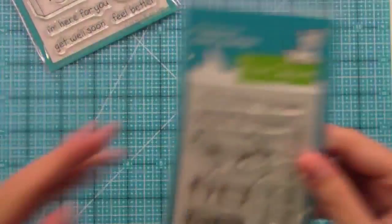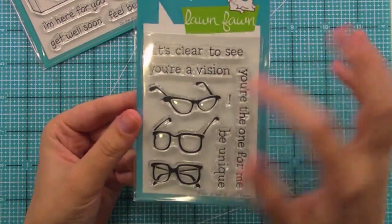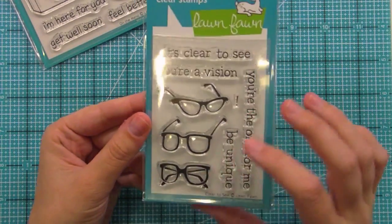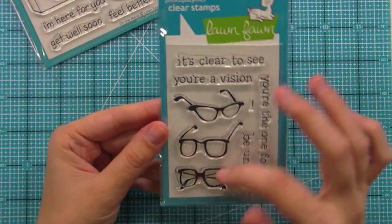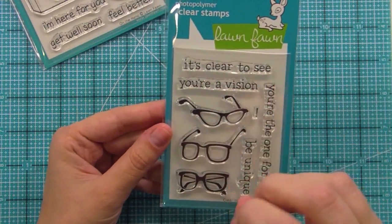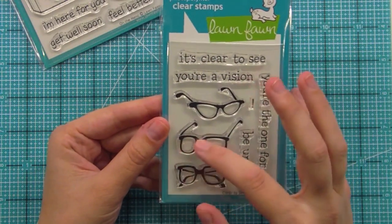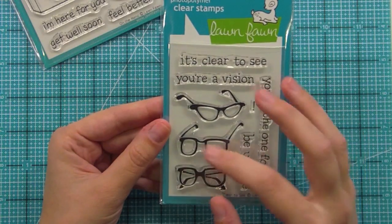Then we have a 4x3 set and this is called Clear to See and we have all of these fun glasses that I just love. I love the idea of making a pattern paper with these. They're super cute for doing even just as one image and it would work really well for cards for dad or mom, grandma, grandpa.